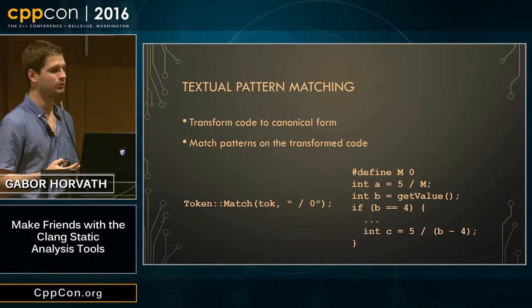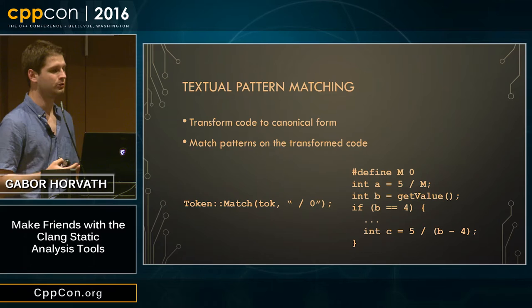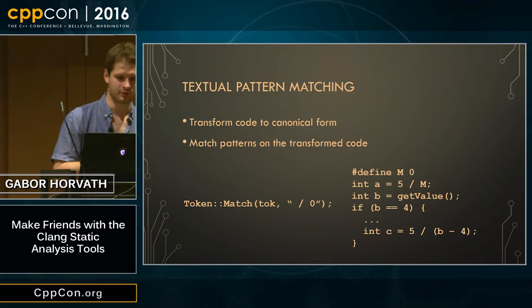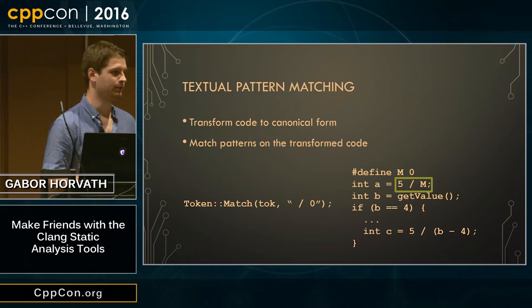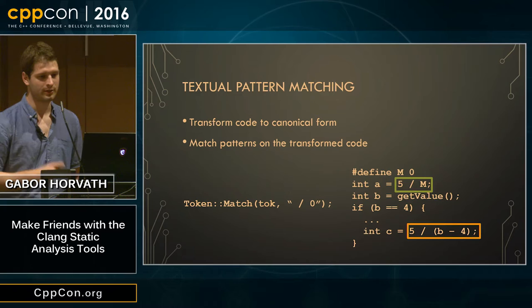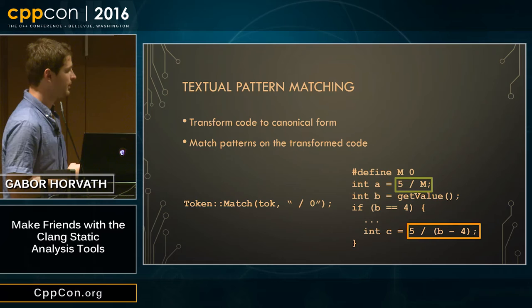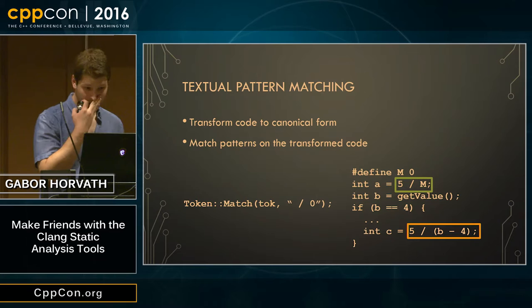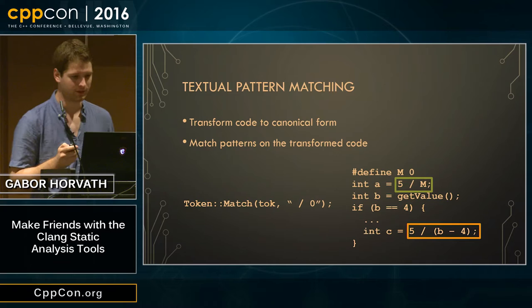The first method is textual pattern matching, where we transform code to a canonical form and match textual patterns on the result. With this technique we can find some errors — for example, a straightforward division-by-zero. But we are unable to find other kinds of errors where the bug is not apparent from text alone.